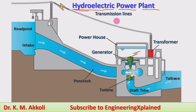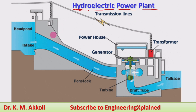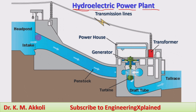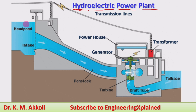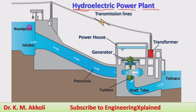Now, what are the components of the hydroelectric power plant? The flowing water is stopped by constructing a dam across the flowing river, and that forms a reservoir of water called the head pond. The head pond is where the water is stored at a certain altitude — the height is required to convert its potential energy.